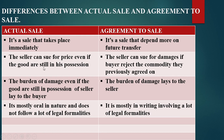In actual sale, the seller can sue for the price even if the goods are still in his possession. Whereas in an agreement to sale, the seller cannot sue for damages if the buyer rejects the commodity previously agreed on.